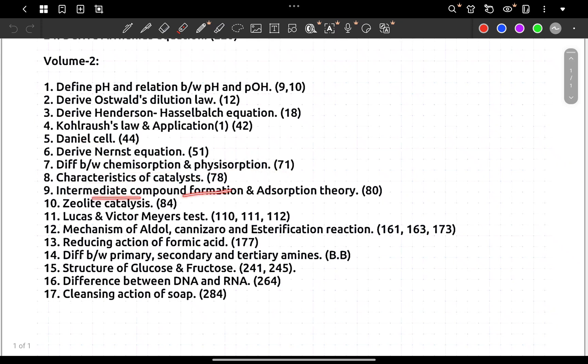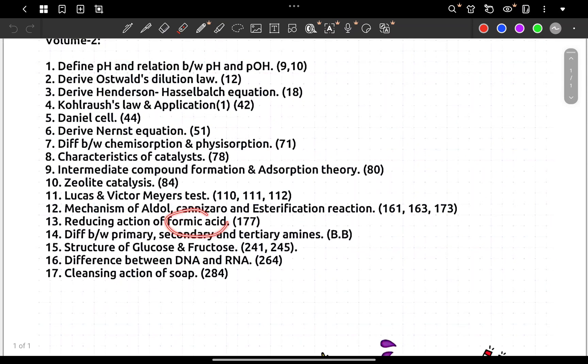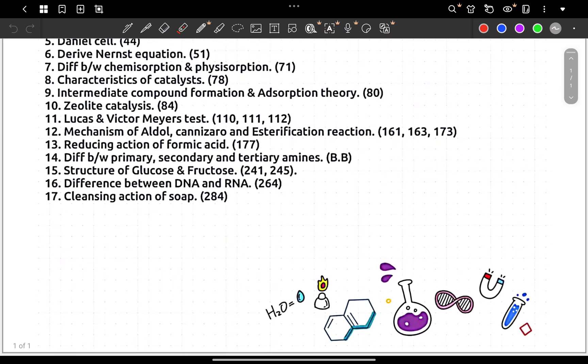Intermediate compound formation theory - that's 3 mark. Zeolite catalyst - that's 5 mark. Aldol condensation reaction, Cannizzaro reaction, esterification reaction mechanism - but esterification choice, but sometimes combined, so 3 separate 5 mark. Reducing action of formic acid.